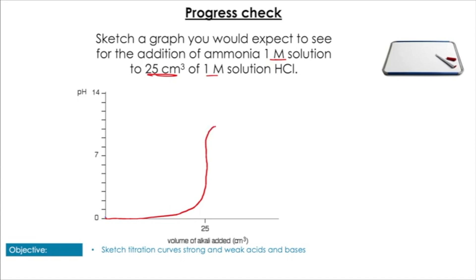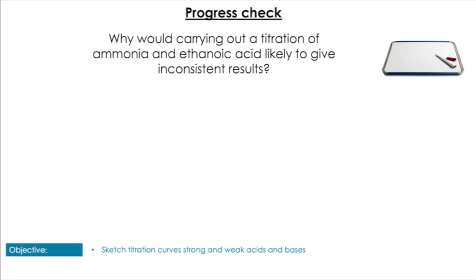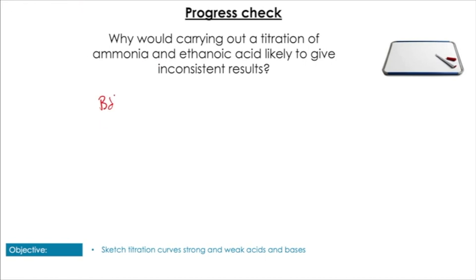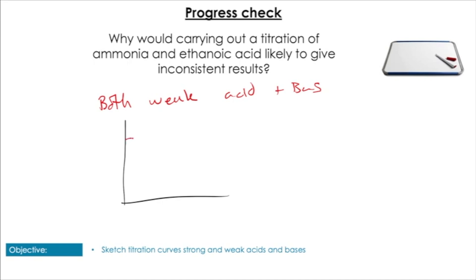Next question: sketch the graph for adding 1 mol/dm³ ammonia to 25 cm³ of 1 mol/dm³ HCl. HCl at 1 molar gives pH of 0, so the curve goes up with the vertical component at 25 cm³, and the solution won't reach a high pH because we're using ammonia (a weak base). Third question: why would titrating ammonia and ethanoic acid give inconsistent results? Both are weak, so there's no guarantee of where the vertical component will be, meaning no meaningful end point.